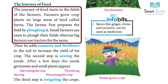The journey of food starts in the fields of the farmers. Farmers grow crop plants on large areas of land called farms. The farmer first prepares the field by plowing it. Small farmers use oxen to plow their fields, while big farmers use tractors.